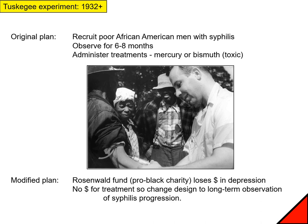The first experiment to discuss is the Tuskegee experiment, which occurred from 1932 onwards. The original plan was to recruit African-American men from the South who had syphilis, a disease we didn't know much about at the time. The idea was to observe them for six to eight months and then give them either mercury or bismuth, both of which are toxic, but back in those days this was actually not a terrible idea because syphilis was a serious disease — this is pre-antibiotic. It was a legitimate scientific question whether these two things could actually cure syphilis.